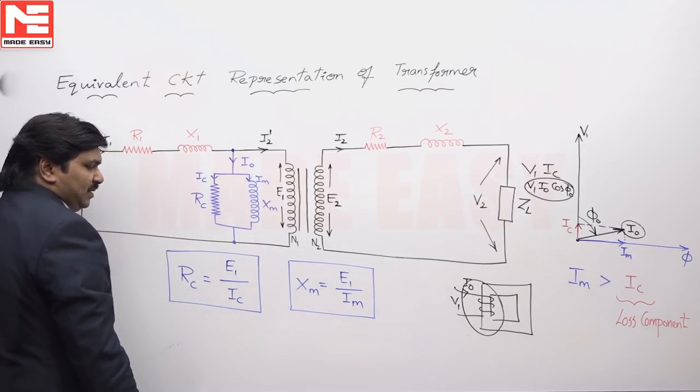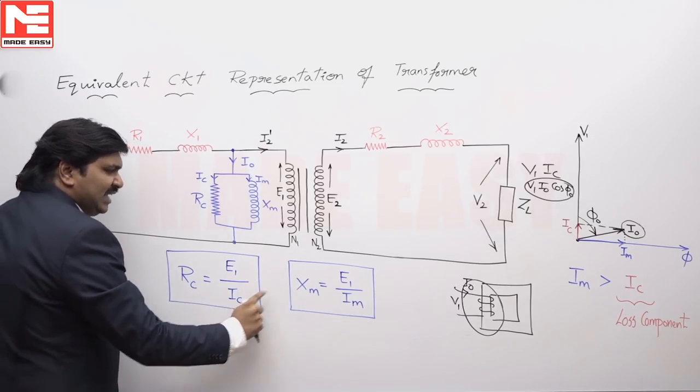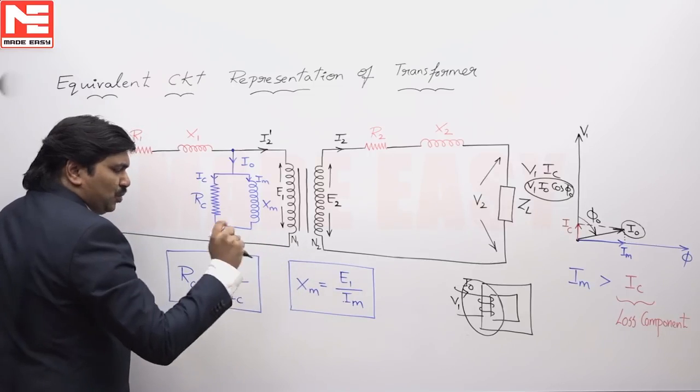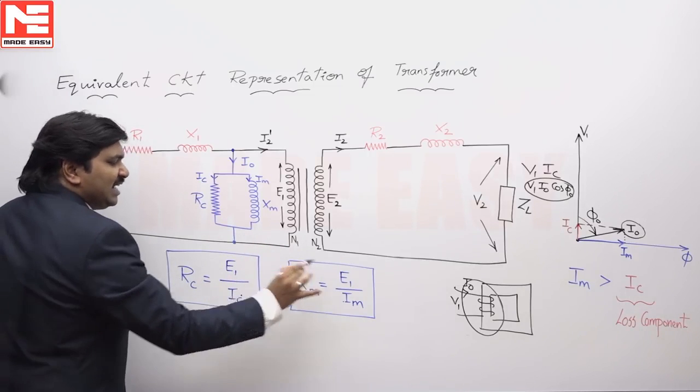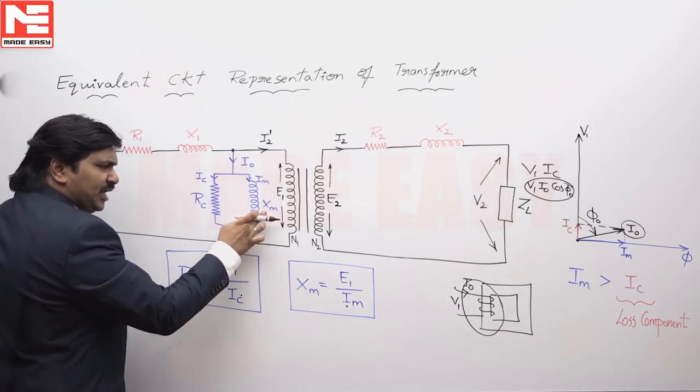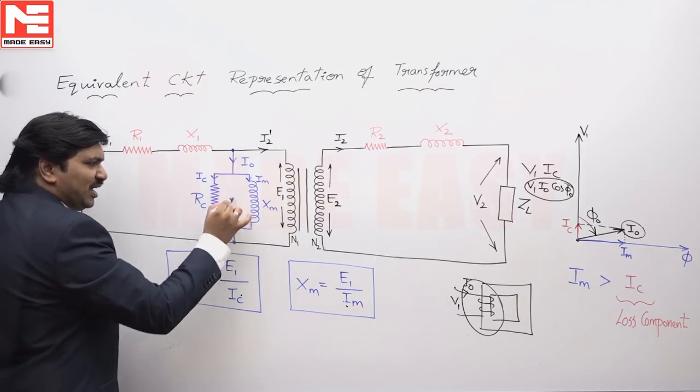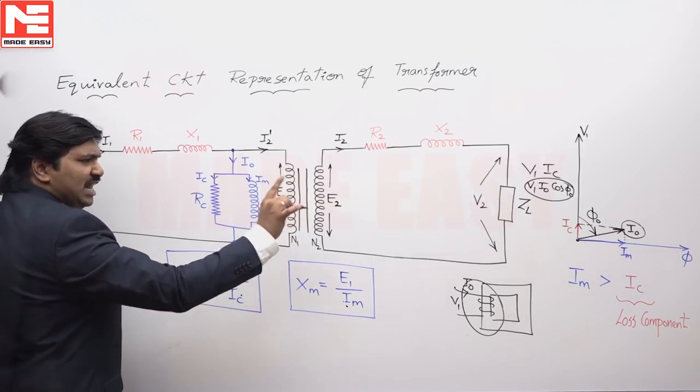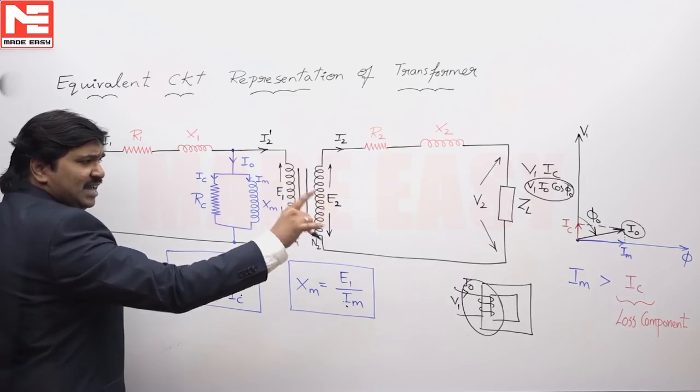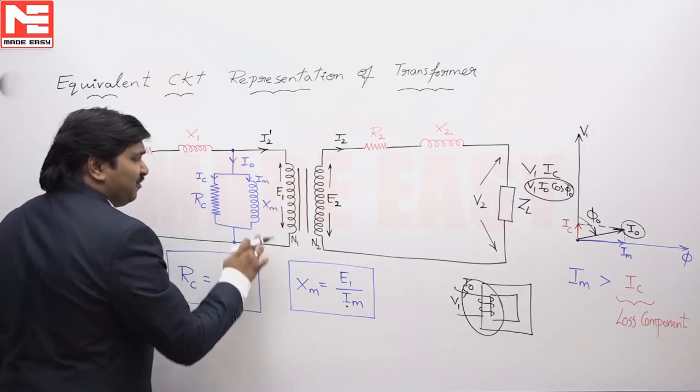For example, R_C, X_M depends on I_C and I_M values. To represent I_C and I_M, we are using an imaginary X_M. It is a pure reactor. We cannot find an ideal reactor anywhere. It is imaginary value. Just to represent that a current which lags voltage by 90 degrees is producing flux, magnetizing current. We have taken X_M.